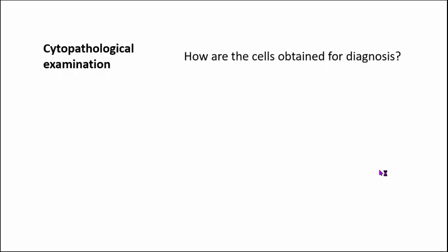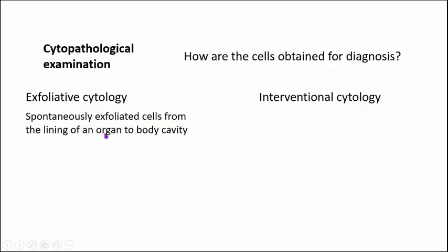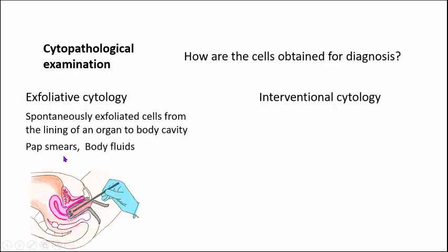Now let's talk about specific laboratory investigations in the diagnosis of cancer. The first and foremost is cytopathological examination, where we study the cells for the diagnosis of cancer. Two important methods for obtaining cells are exfoliative cytology and interventional cytology. In exfoliative cytology, cells are spontaneously exfoliated or shed from the lining of an organ into the underlying body cavity — for example, Pap smears used for diagnosis of cervical lesions, and examination of body fluids like ascitic fluid and pleural fluid.